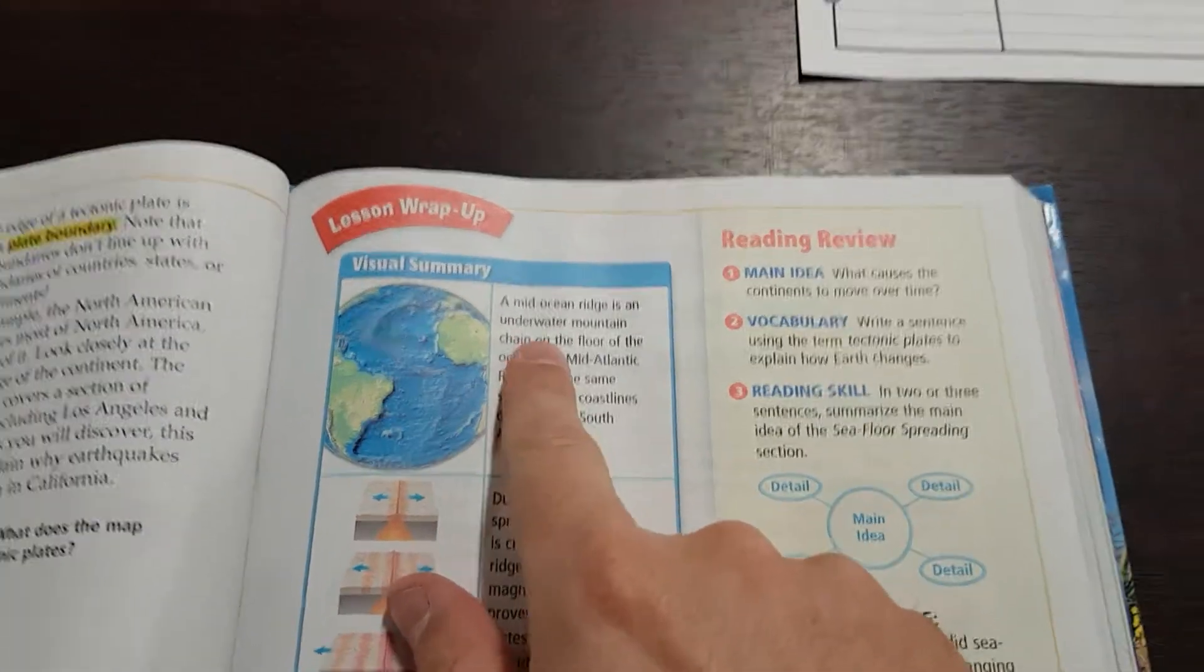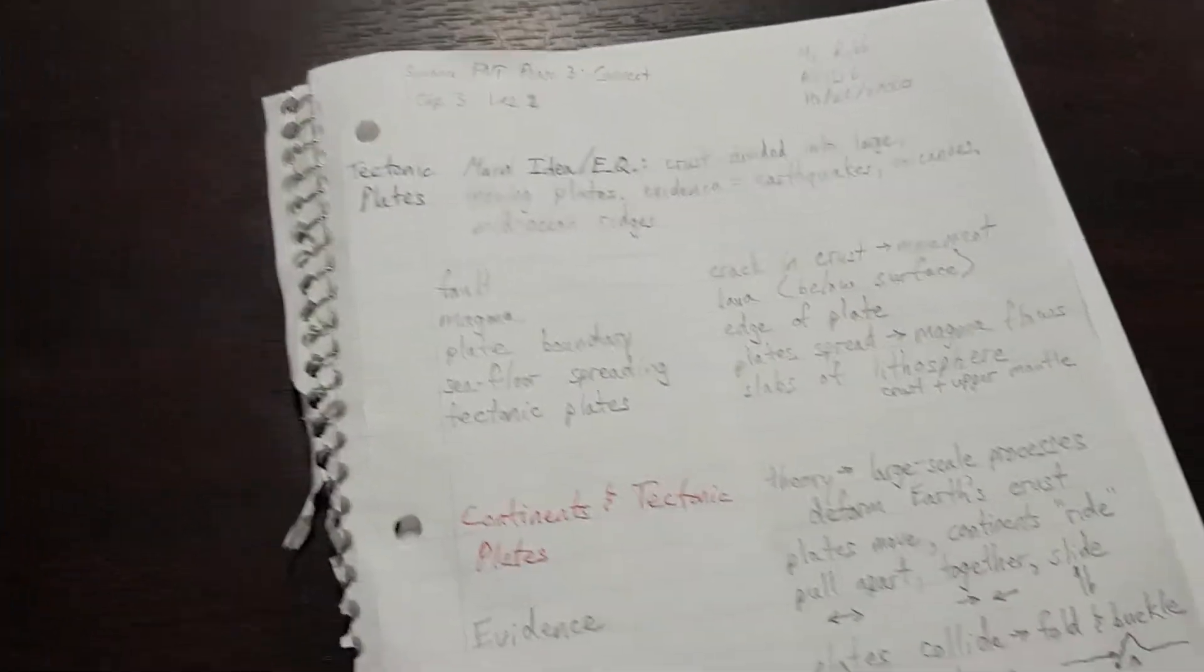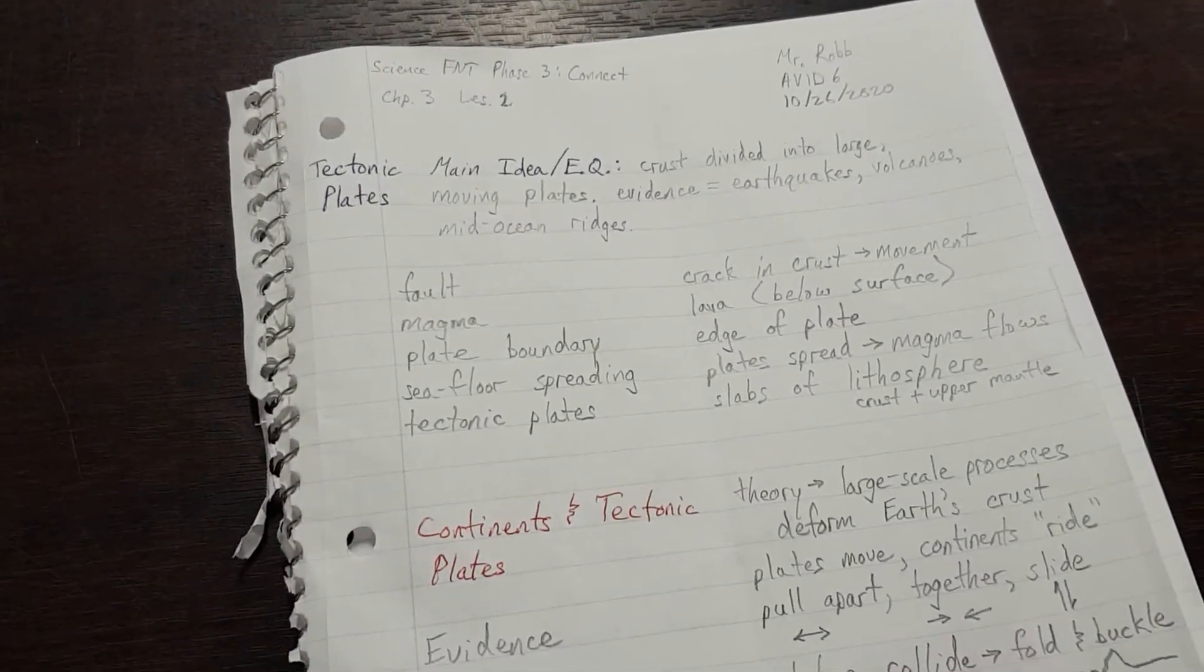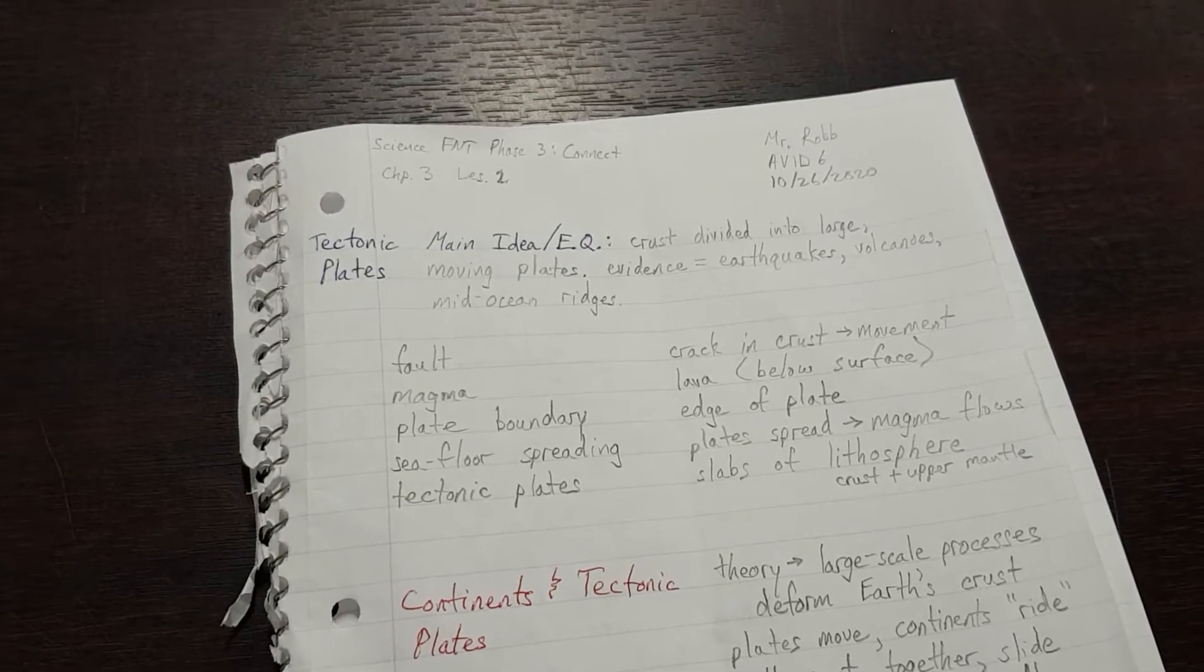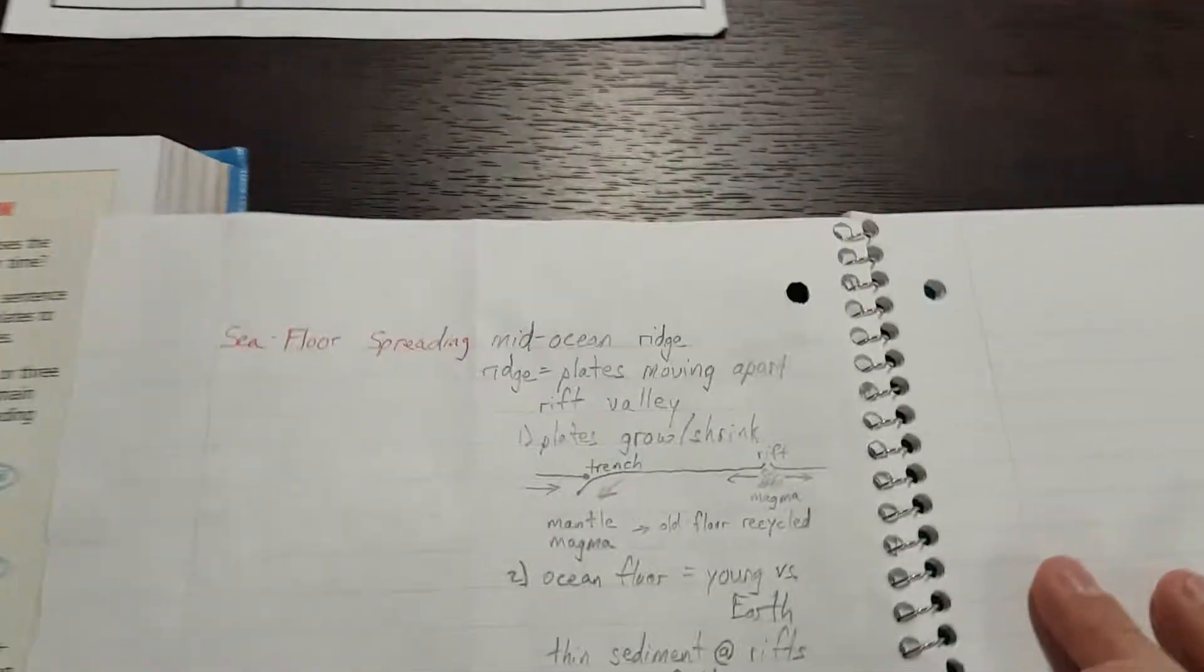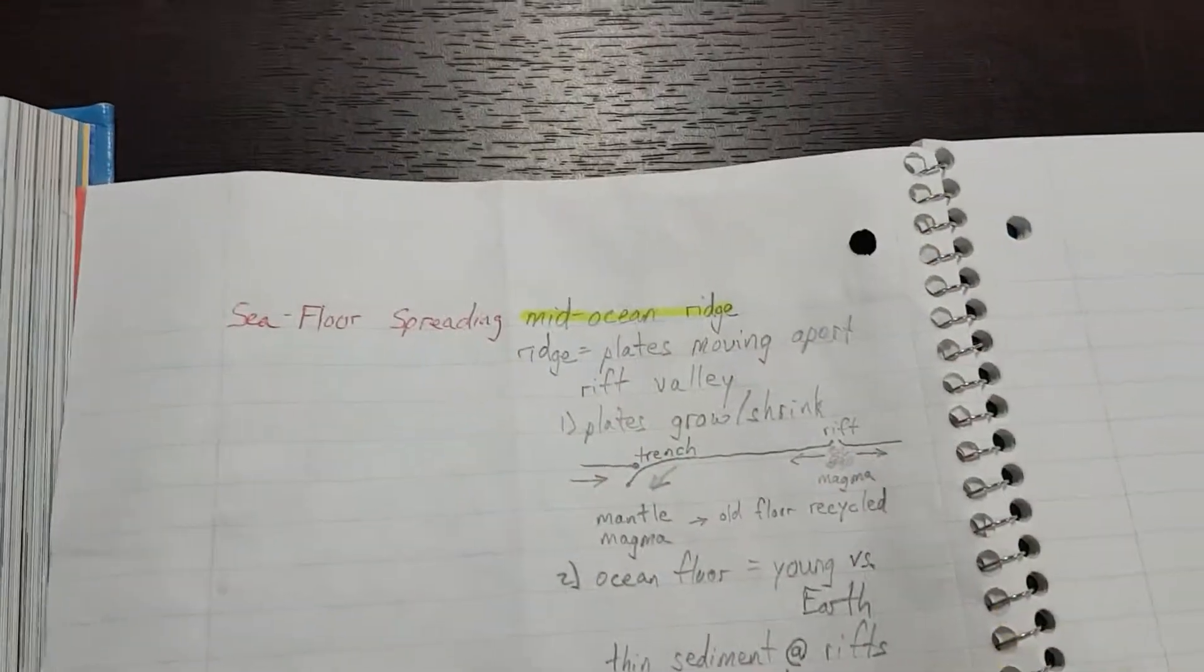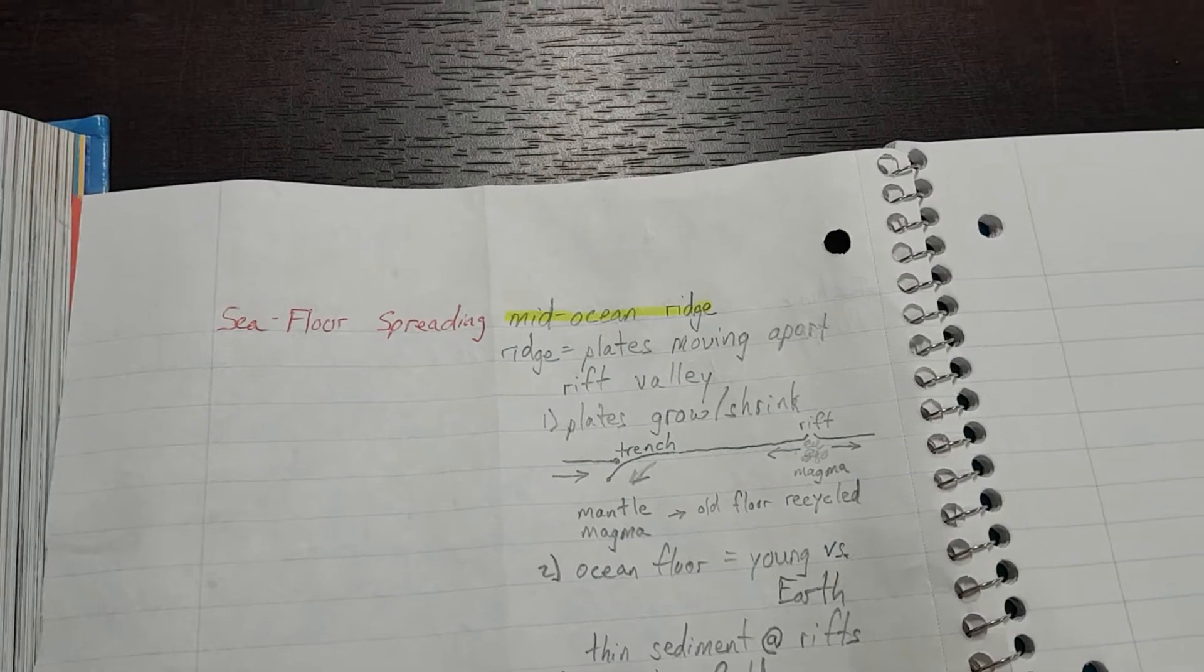A mid-ocean ridge is an underwater mountain chain on the floor of the ocean. Okay, mid-ocean ridge, underwater mountain chain. Where are the mid-ocean ridges? Aha, here we go. Mid-ocean ridge. Okay, underwater mountain chain.